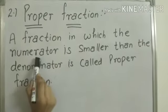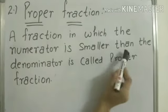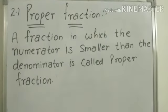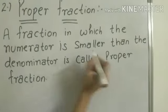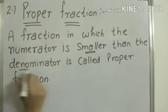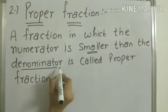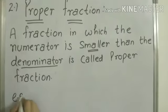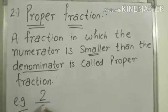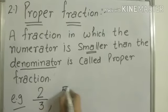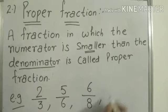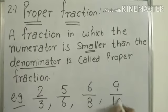Proper fraction: a fraction in which the numerator is smaller than the denominator is called a proper fraction. For example: 2 by 3, 5 by 6, 6 by 8, and 9 by 10.